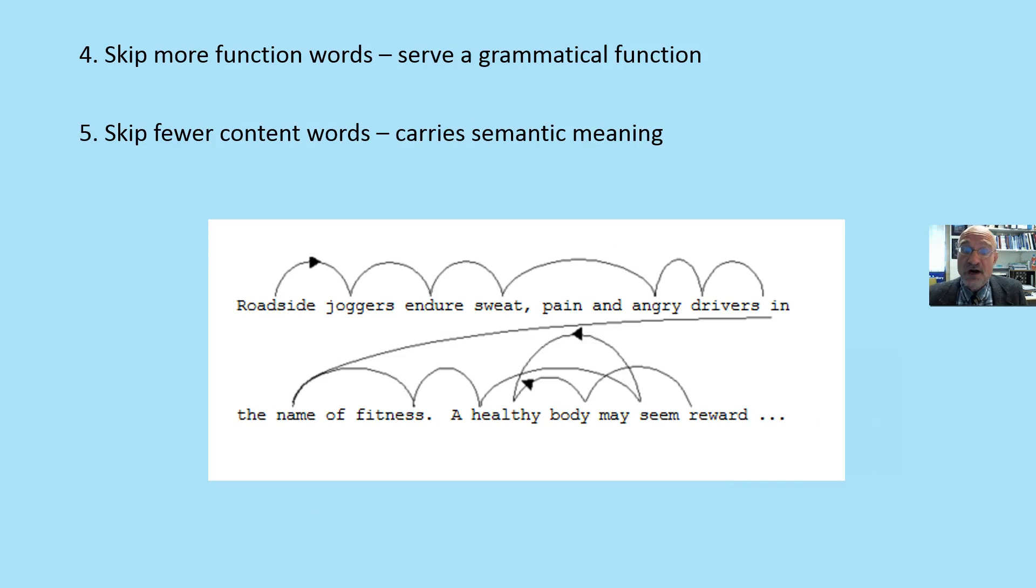The length of the word didn't matter as far as skips go. We tend to skip more function words. These are words that serve only a grammatical function: in, there, over, and. We skip fewer content words. These are words that carry semantic meaning. Again, this represents the act of reading as a meaning-making process. We're trying to create meaning, so of course it makes sense that we'll fixate on more content words.